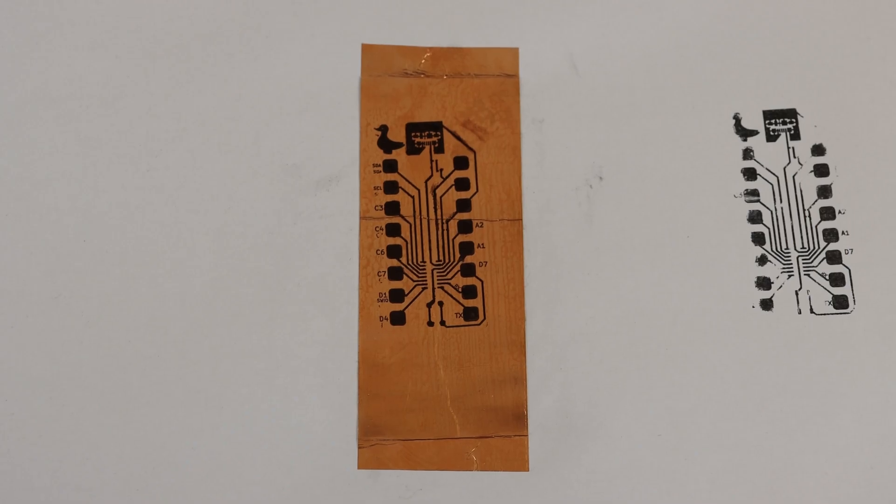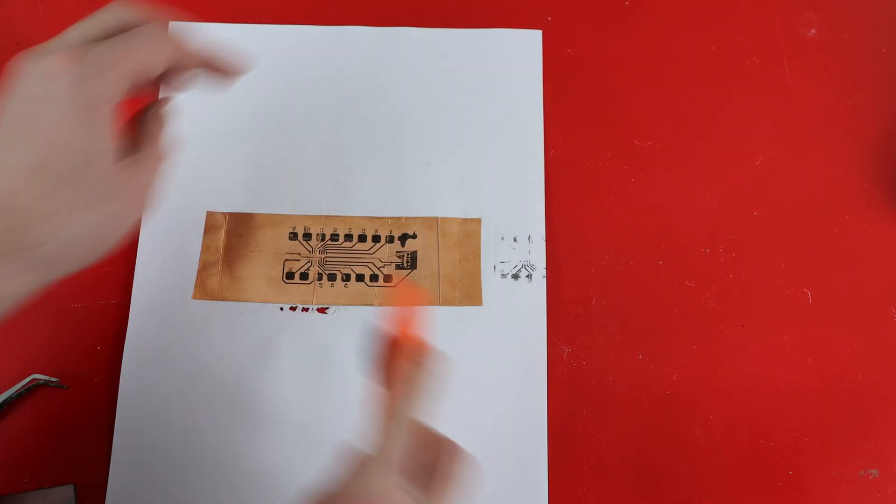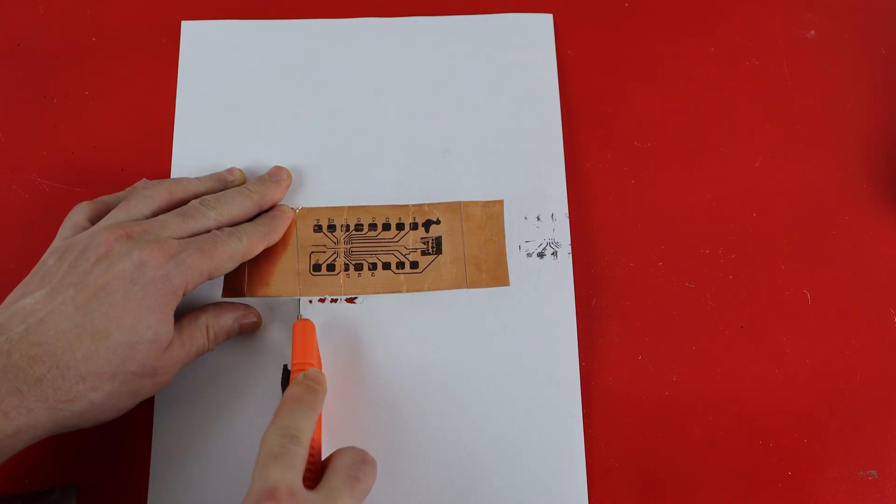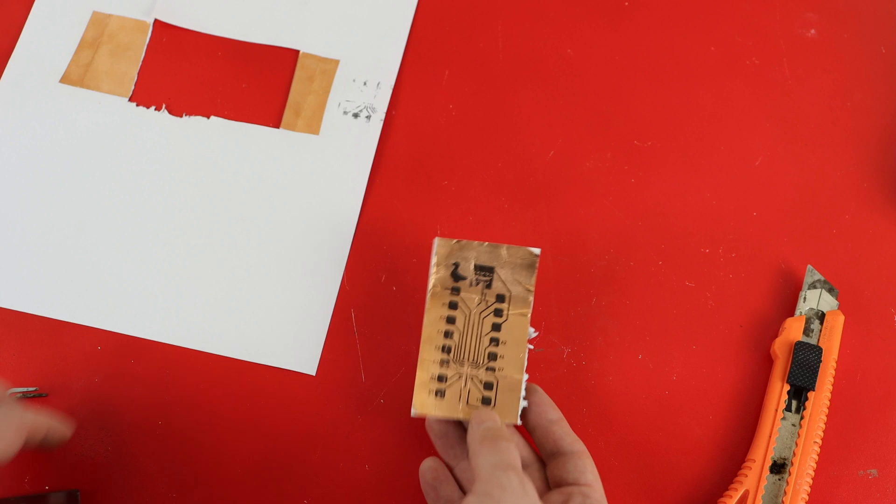And this is what it looks like after a little bit of a touch up. And the next step is removing the copper from the paper. And I am doing that by simply cutting it. After all these steps, you should have something like this.